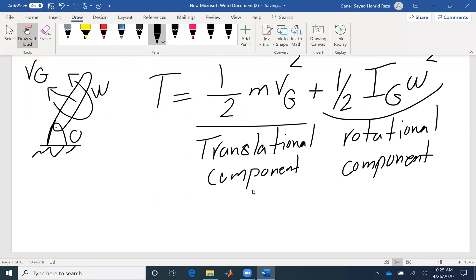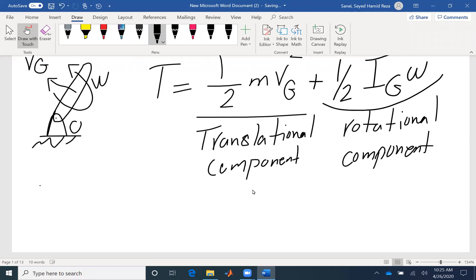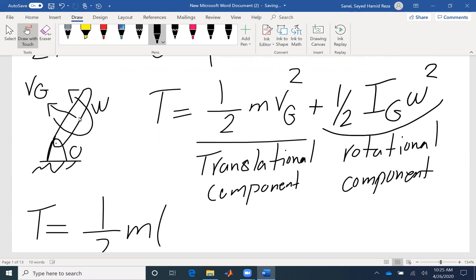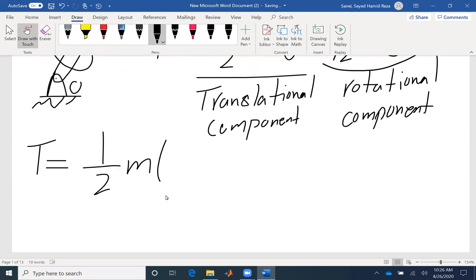So let me expand that. For the kinetic energy, half m, what is the velocity of center of gravity? You can find the velocity based on omega, so velocity would be RG omega squared.